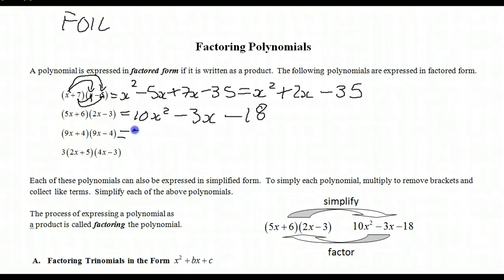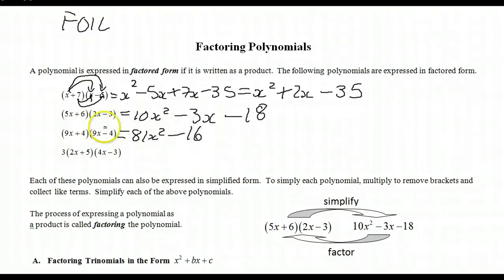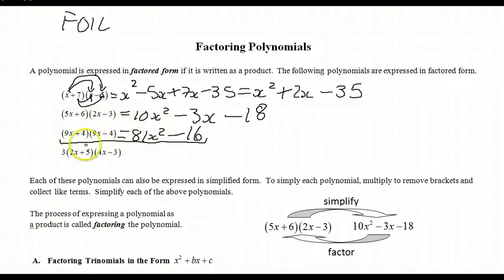81x squared, minus 36x plus 36x — that gives 0x, minus 16. This is a special product called a difference of squares. We've got 81x squared minus 16. This is a square and this is a square, and that's the factorization of that special product, a difference of squares.